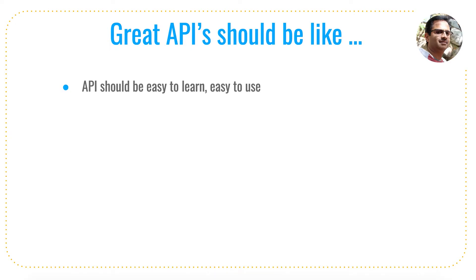The first one is: an API should be easy to learn and easy to use. There are hundreds and thousands of APIs, and if you are not able to learn or utilize them, they're going to be useless. You have to write an API in such a way that it can be easily learned and used. For example, if you want to create an account, the API should be named 'create account', or if you want to delete an account, it should be named 'delete account'.